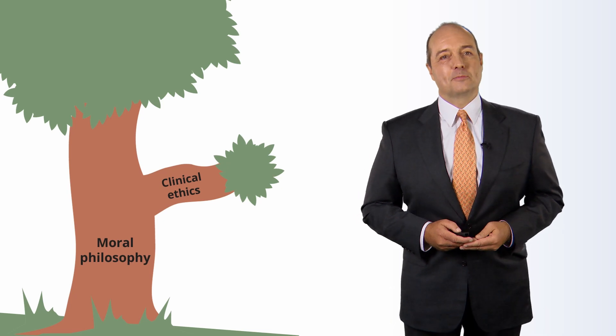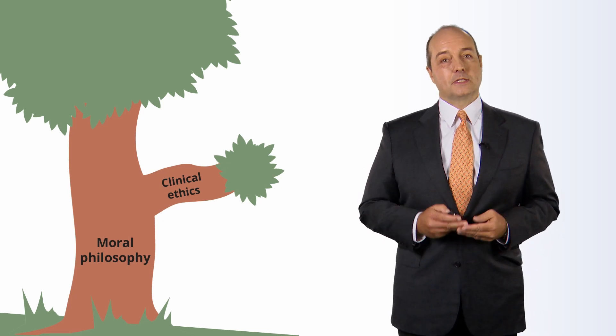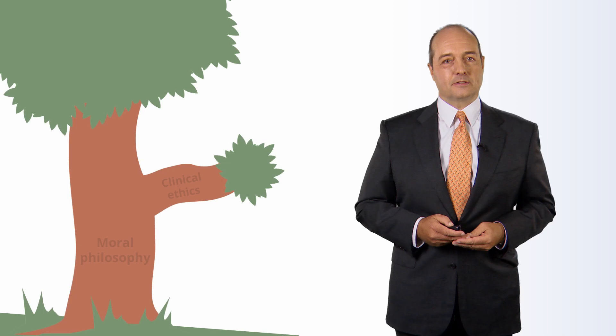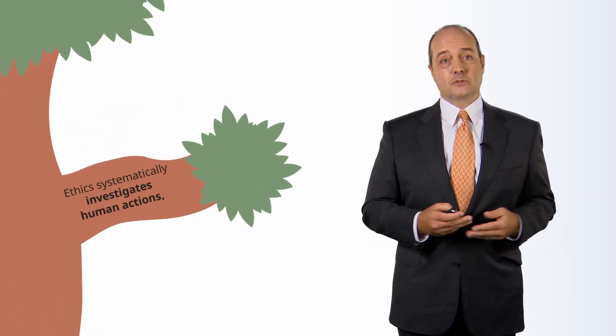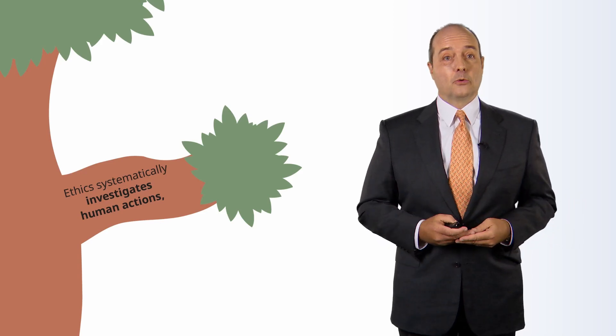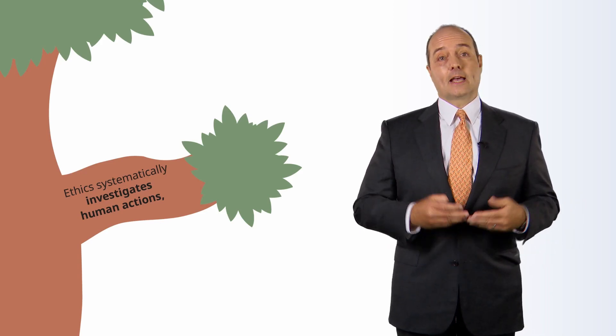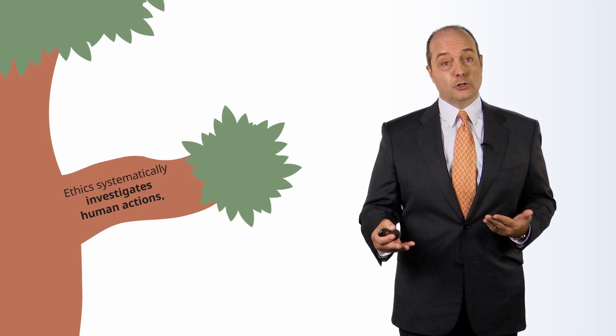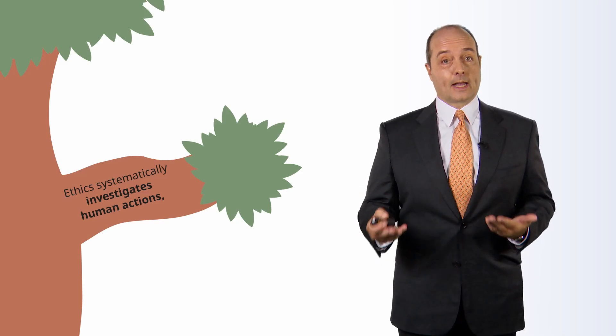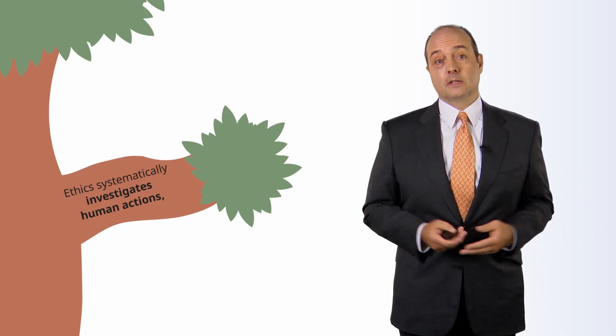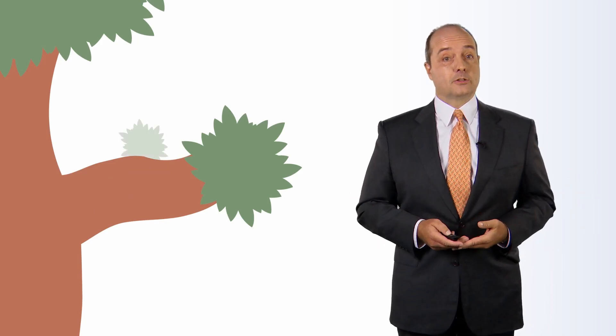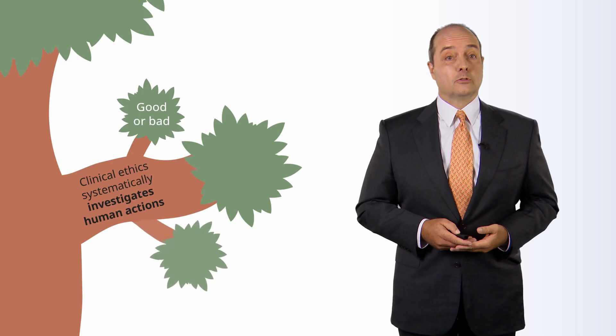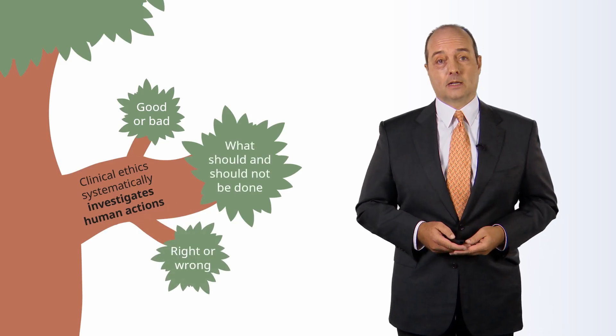So what is ethics? It's a branch of moral philosophy which systematically investigates human actions. So when we're thinking about human beings performing actions, we can consider them actors or moral agents. They have the agency, the ability to choose how to perform their actions, how they're going to conduct themselves in the world. And we can think about those actions in terms of good or bad, right or wrong, what should or should not be done.